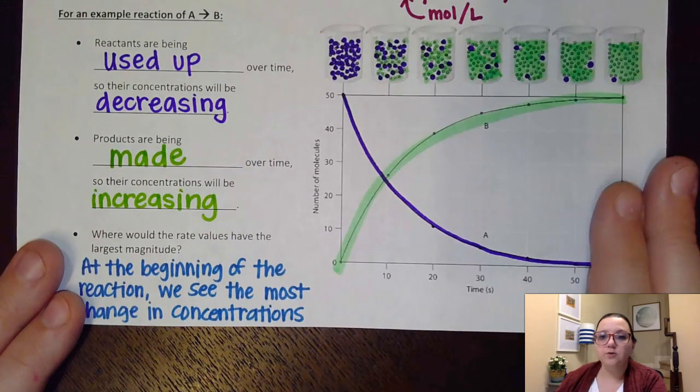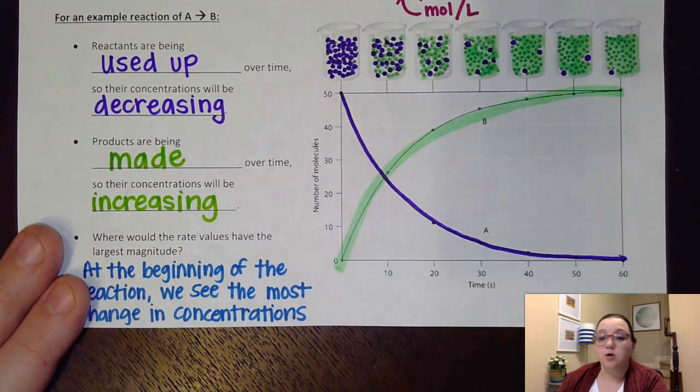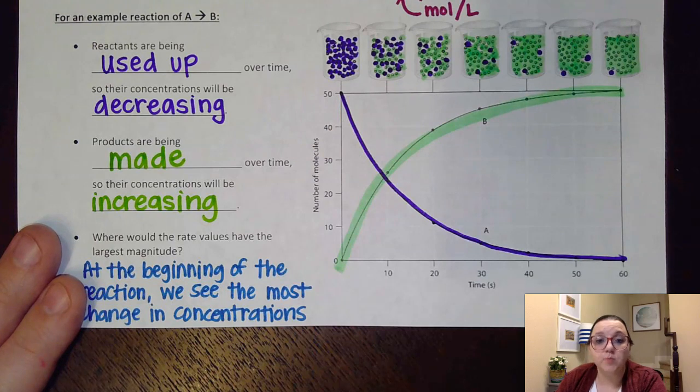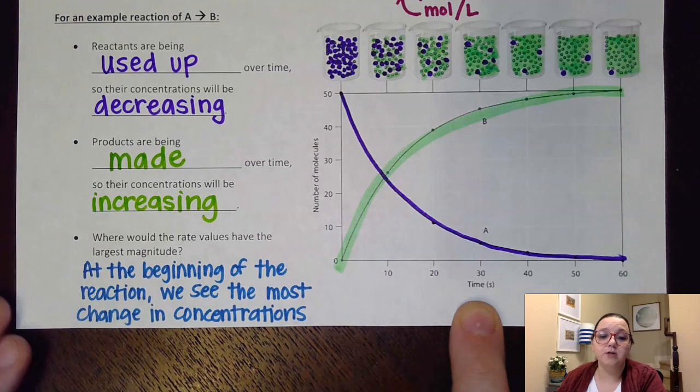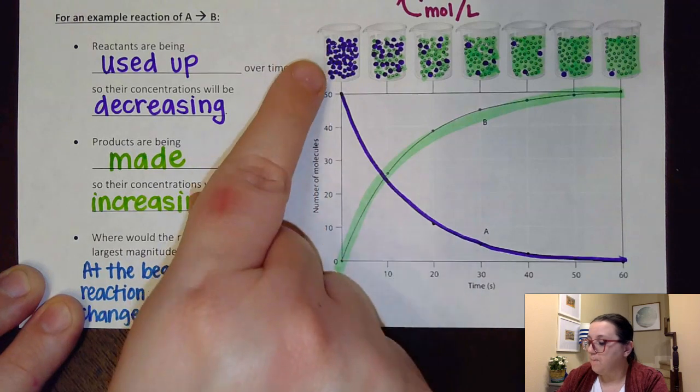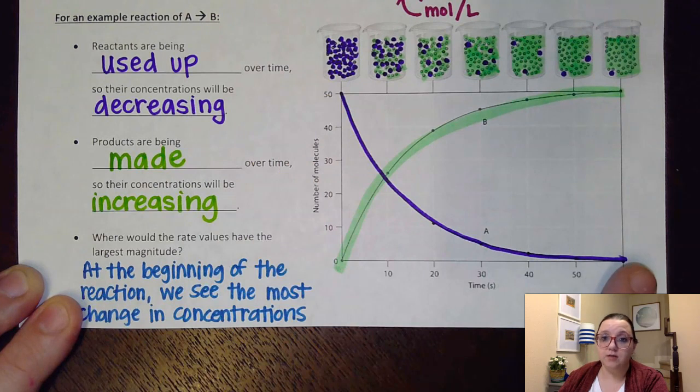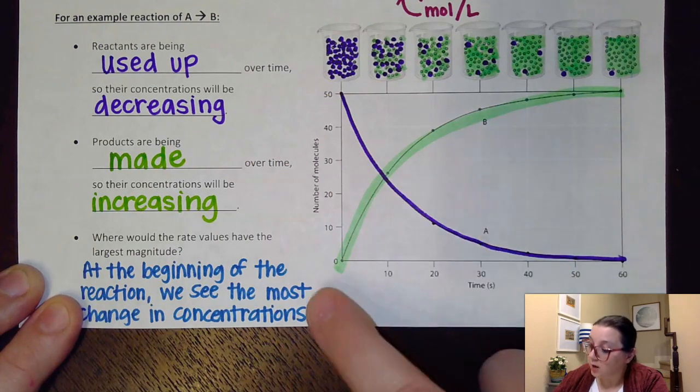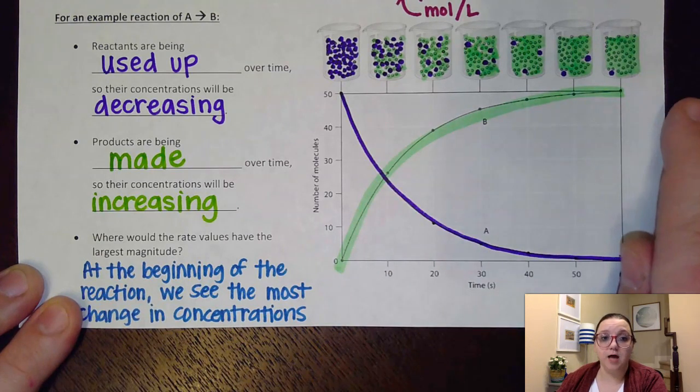So to see this in a graph, what you'll notice here is that on this axis, we have number of molecules. Now you could use molarity there as well. It's some indication of the concentration. Down here you have time. And for this one, they're measuring it in terms of seconds. And so what we see is the purple curve here represents how A is decreasing over time. And this curve going up in green is how B is increasing over time.